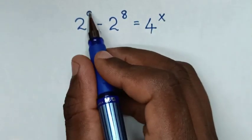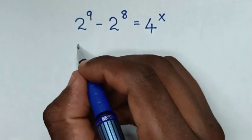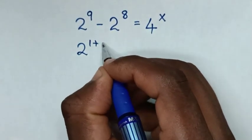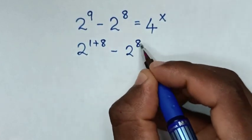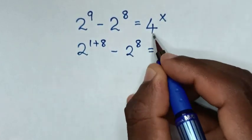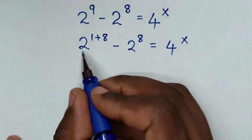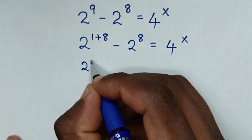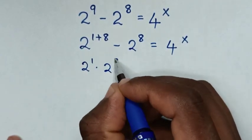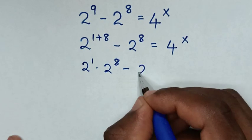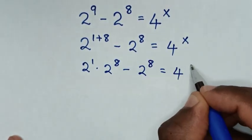First, from 2 power 9, to have a common power of 8, this is the same as 2 power of 1 plus 8, then minus 2 power of 8 is equal to 4 power x. The next step will be 2 power of 1 times 2 power of 8, then minus 2 power of 8 is equal to 4 power x.